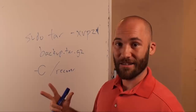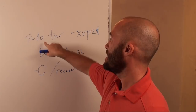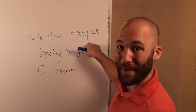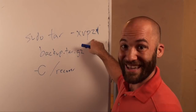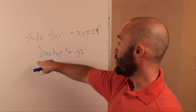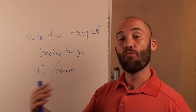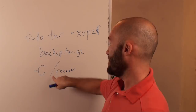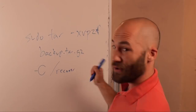So the full recovery command is: sudo, space, tar, space, hyphen, lowercase X for extract, V for verbose, P for permissions, Z to uncompress — unless you didn't compress originally — F for file name, then the tarball name, then space, hyphen, uppercase C, to recover to a specific directory. I would create a directory called recover and dump everything there, just to make sure you don't overwrite things you may need. This is all you need to do to recover files and folders from a tarball.